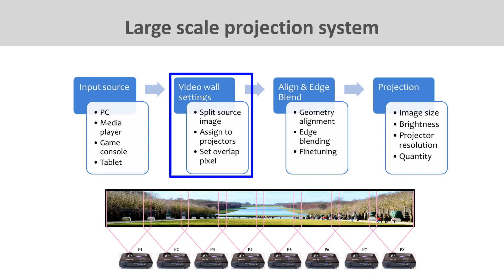The video wall setting consists of two processes. One is image split — splitting the image and distributing them to multiple projectors in assigned orders. The other is overlap setting: in order to combine images seamlessly, some content must be doubled at the edge between every two images so they can be blended with no gap.